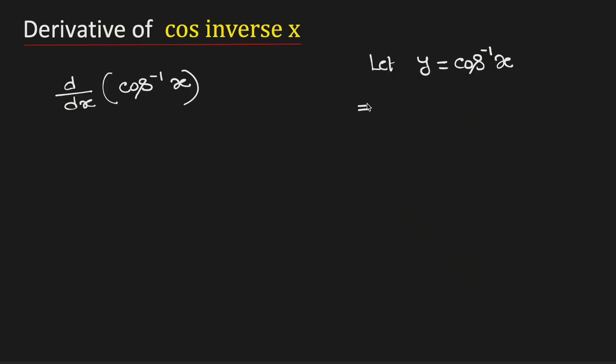Now we will take cosine on both sides. By doing so we will get cos y is equal to cos of cos inverse x. And this will give us cos y is equal to x.